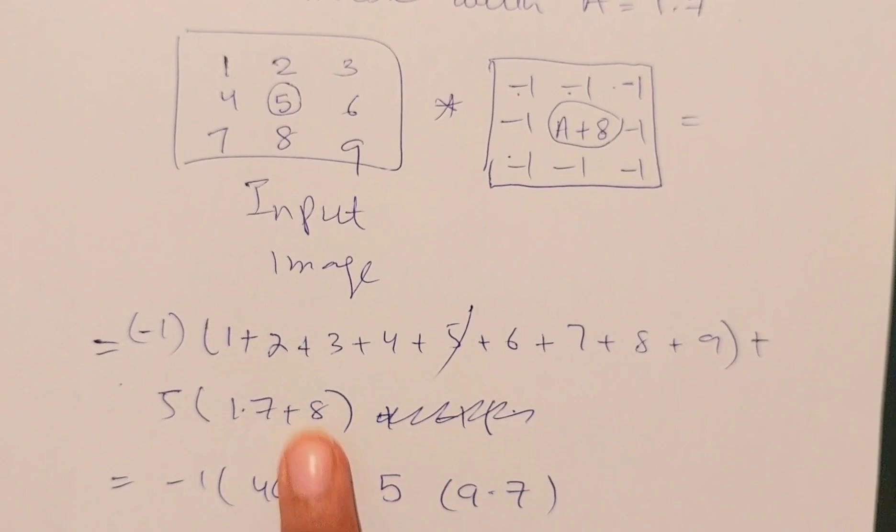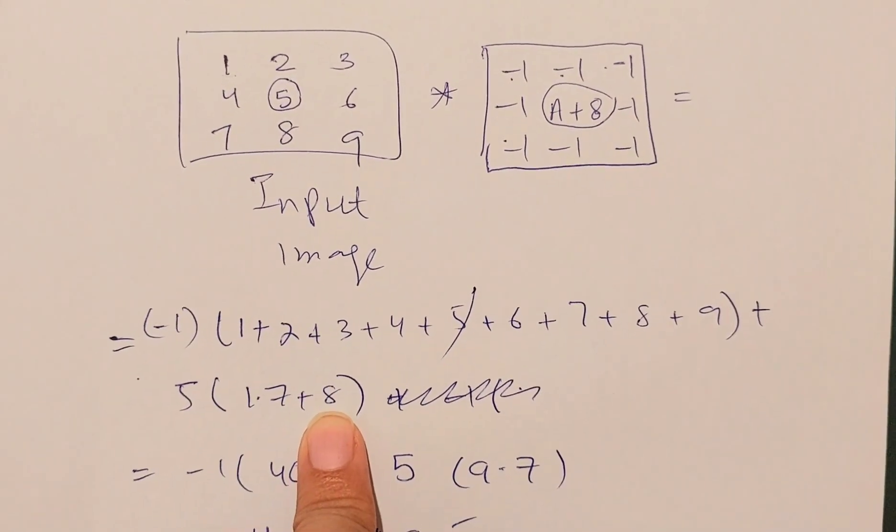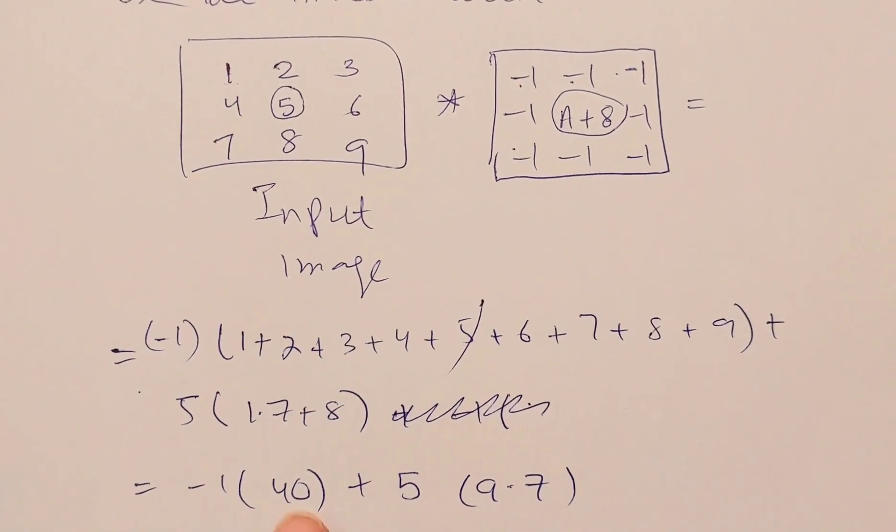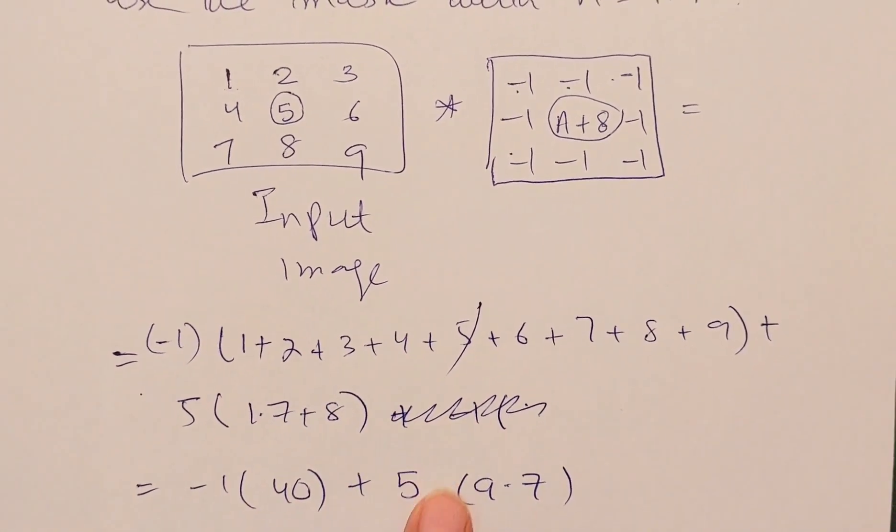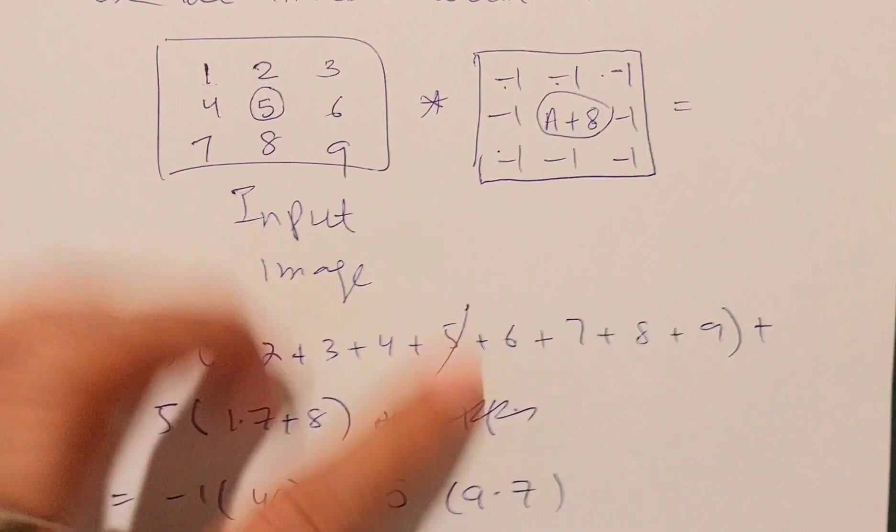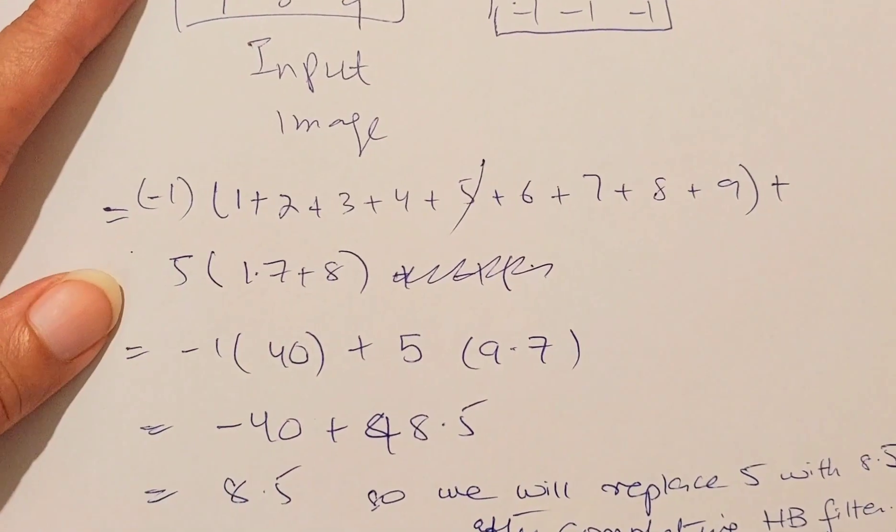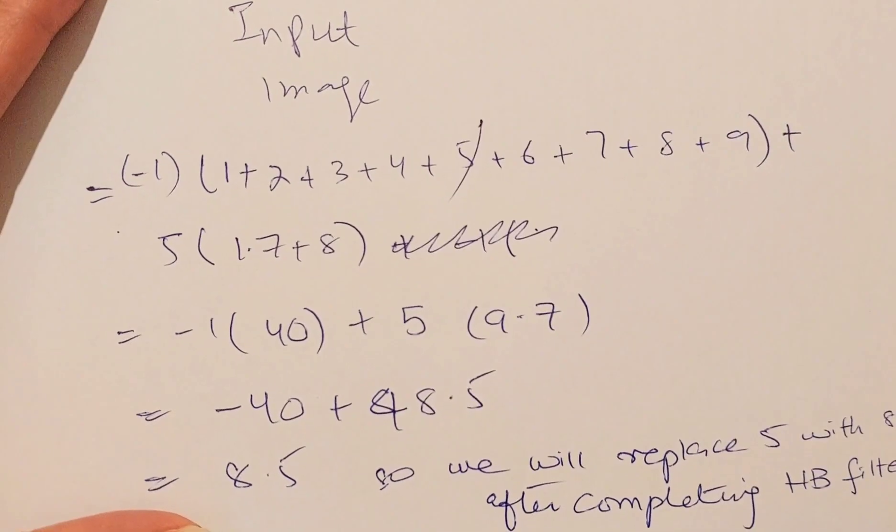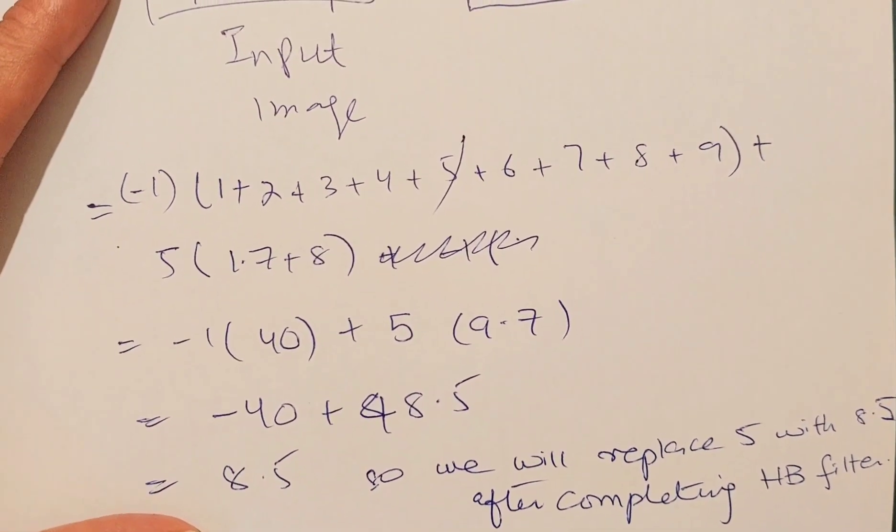When we add all these things, it is coming out to be 40 multiplied by minus one, and it is 5 multiplied by 9.7. The answer is coming out to be minus 40 plus 48.5, which is equal to 8.5. We will replace the central pixel value of 5 with 8.5 after completing the high boost filtering.